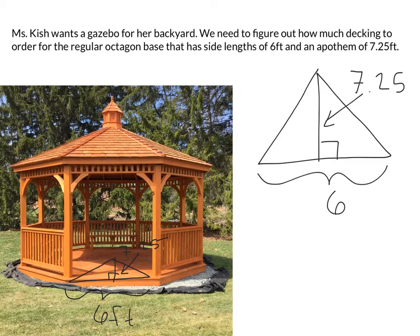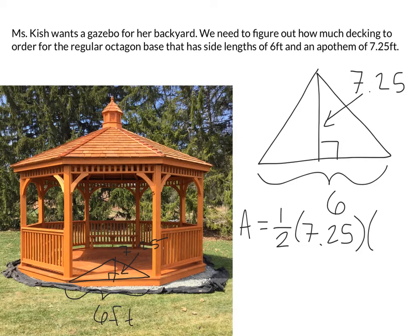Let's talk about this in both ways. First, if I use the formula: area equals one-half times the apothem times the perimeter. I'd have one-half times my apothem, which is 7.25, times my perimeter. Well, if I've got eight sides and there's six feet apiece, that's 48. So plugging into the calculator: one-half times 7.25 times 48 — I'm going to end up with 174 square feet of decking.